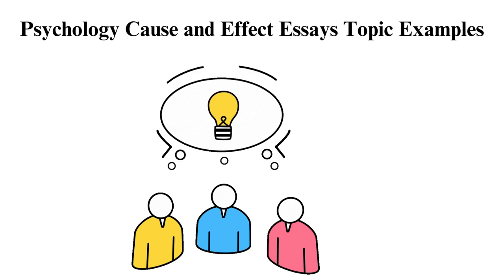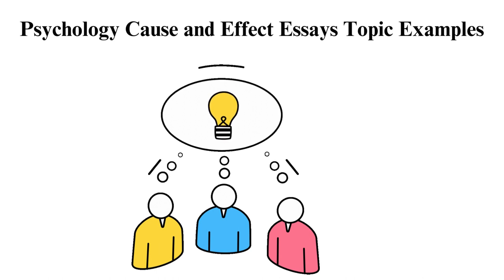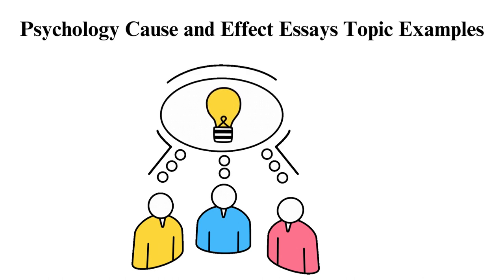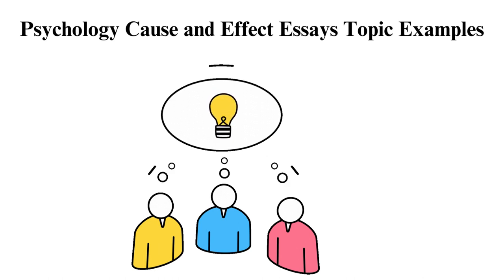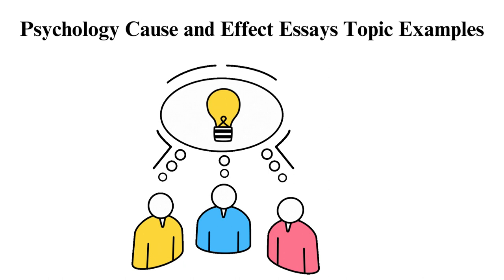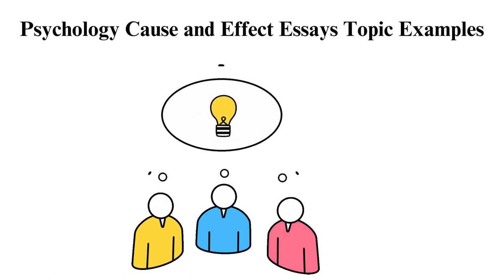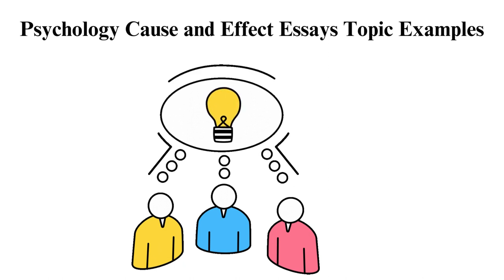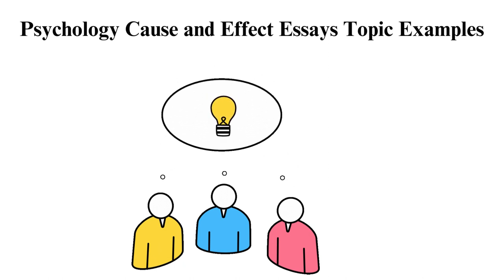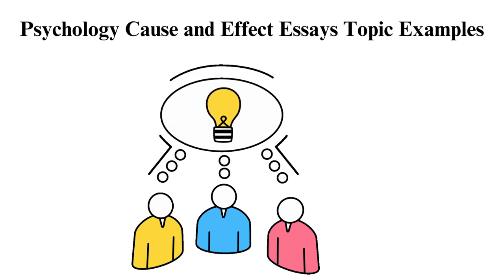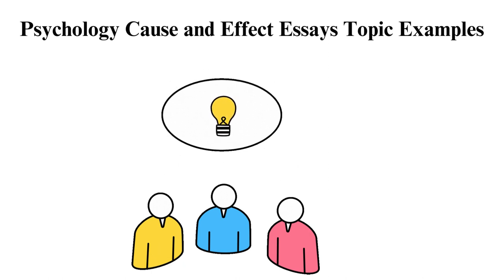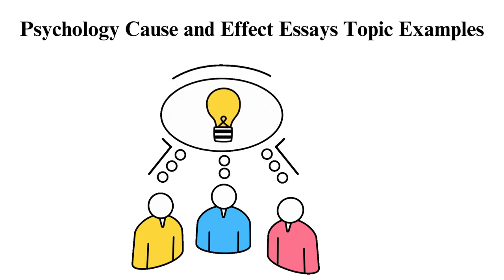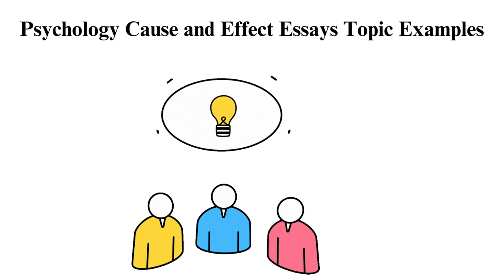7. Why do people in relationships lack good communication? 8. What causes addiction issues? 9. How do parenting models influence children's behavior? 10. Reasons for students' poor academic performance. History Cause and Effect Topic Ideas.